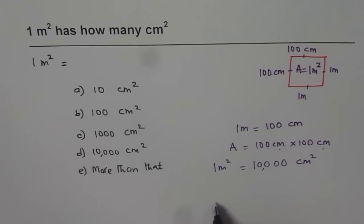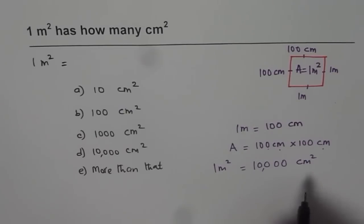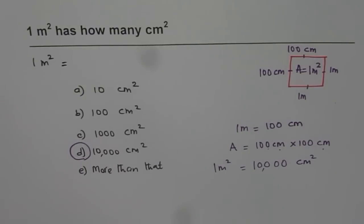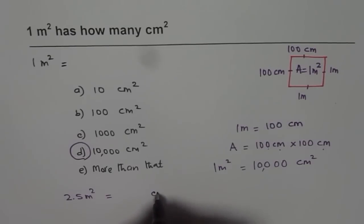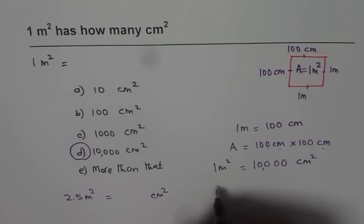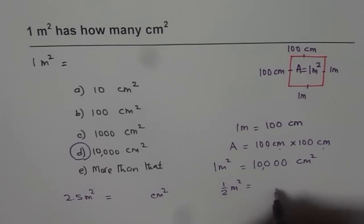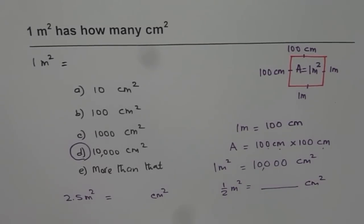We know this area is 1 meter square, and so 1 meter square is equal to 10,000 centimeters square. Therefore, option D is correct. Remember: 1 meter square is 10,000 centimeters square. That is indeed interesting. Now figure out how much is 2.5 meter square in centimeter square, and how about half meter square equals to how many centimeters square? You can do the conversion using 1 meter square equals 10,000 centimeters square.